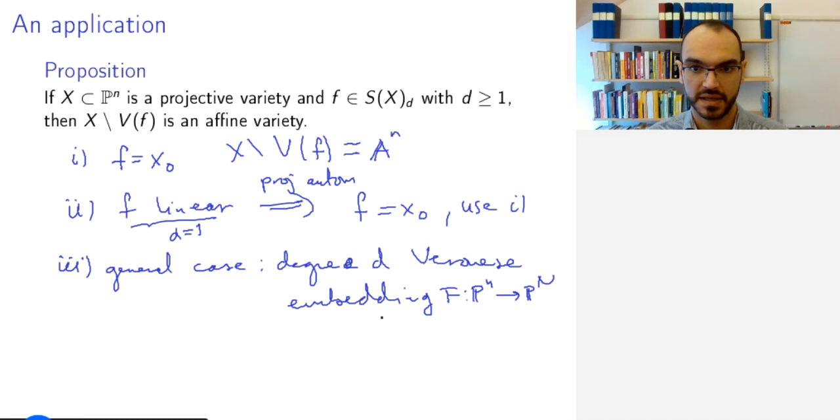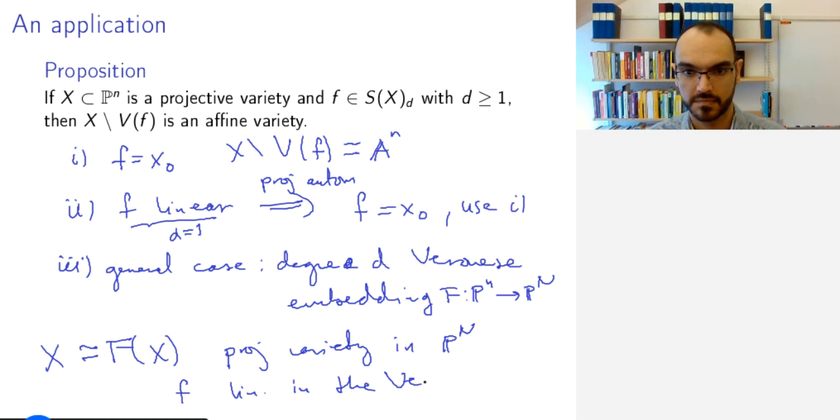And F(X) is isomorphic to X. And now f is linear in the Veronese coordinates.